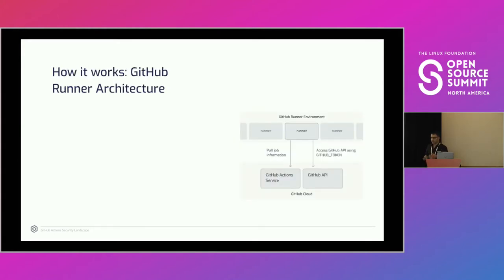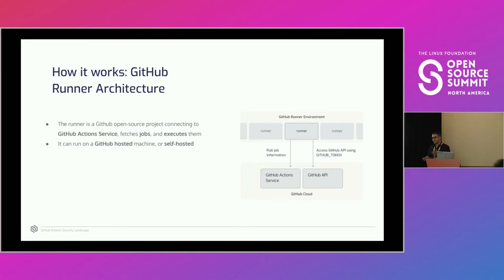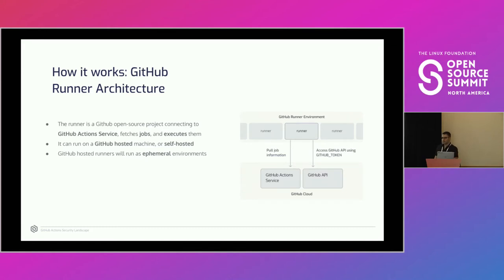To understand the vulnerabilities we found, we need to understand some core mechanics of GitHub Actions. The entity that executes jobs and workflows is called the GitHub Runner — an open source project maintained by GitHub that fetches jobs from the GitHub Action service and executes them. This runner can run either on a GitHub-hosted machine, which is the more popular method, or on a self-hosted machine. On a GitHub-hosted machine it runs as an ephemeral environment, meaning each job runs on a completely clean, VM-isolated machine that is deleted when the job is over.